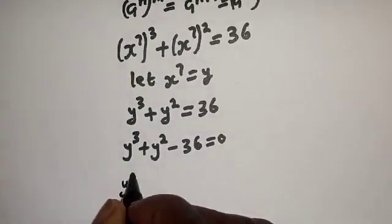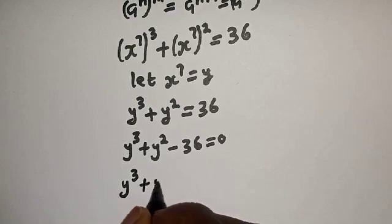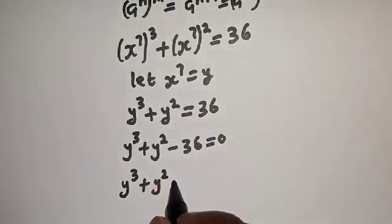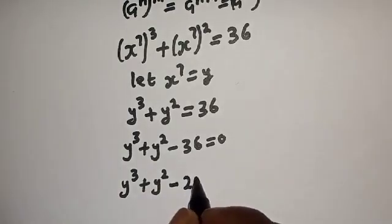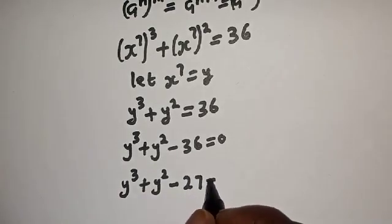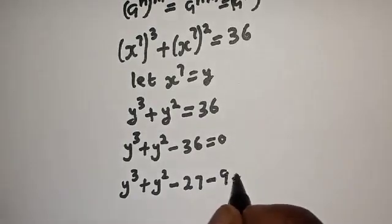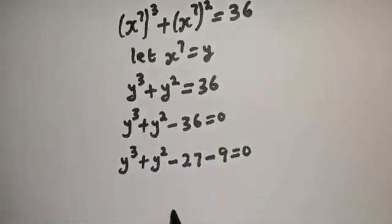y raised to power 3 plus y squared minus 36 can be written as y cubed minus 27 plus y squared minus 9 is equal to 0.